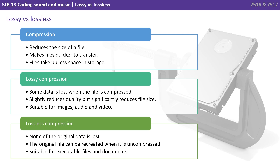So let's recap. Compression reduces the file size, makes the file quicker to transfer, and the file takes up less space in storage. With lossy compression, some data is actually lost when the file is compressed — it slightly reduces quality but can significantly reduce the file size, and it's great for multimedia files such as image, audio and video. With lossless compression, none of the original data is lost, so the original file can be recreated when it's uncompressed, and it's suitable for executable files and documents.